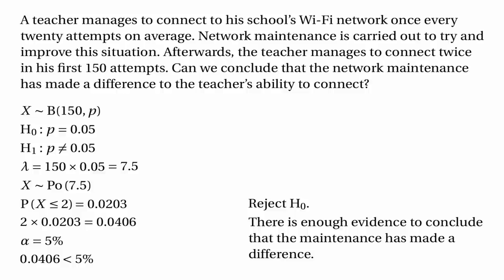There are a couple of things to note. First, this was a two-tailed test because the alternative hypothesis said p was not equal to 0.05 — because we were asked whether the maintenance made a difference, not whether it improved or worsened things. As it was a two-tailed test, we needed to double the probability: 0.0203 is the probability of an outcome like 2 that is less than 7.5, but we also need to include the probability of an outcome much larger than 7.5. Whenever you have a two-tailed test, you need to double the probability.